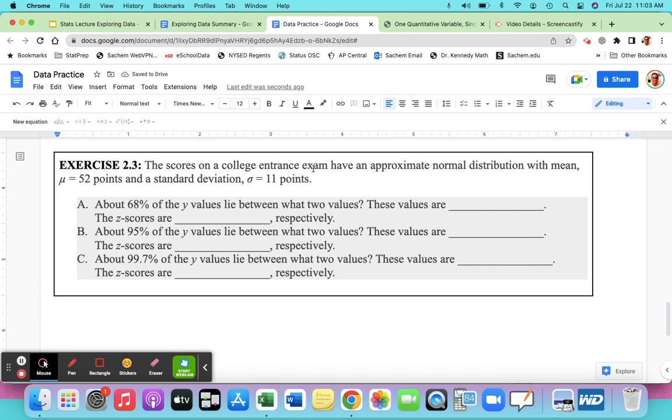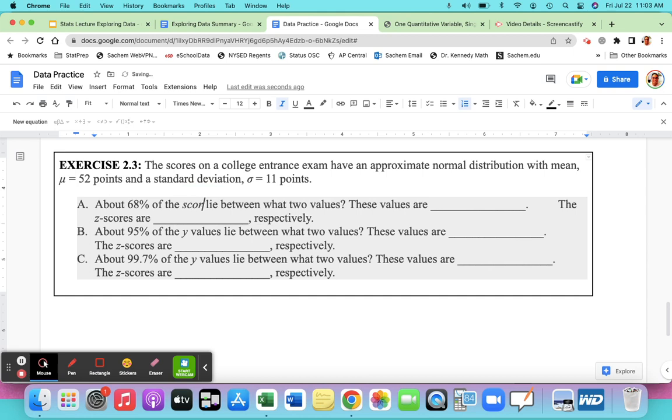The scores on a college entrance exam, similar to the SAT maybe, have an approximately normal distribution with a mean equal to 52 and a standard deviation equal to 11. About 68% of the scores lie between what two values? These values are blank and blank. The z-scores are blank and blank. All right, so 68%.